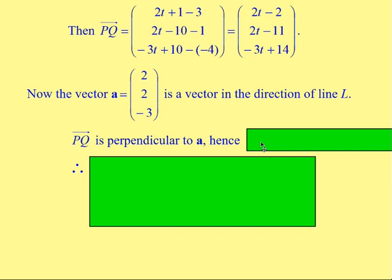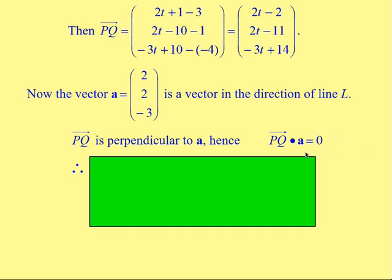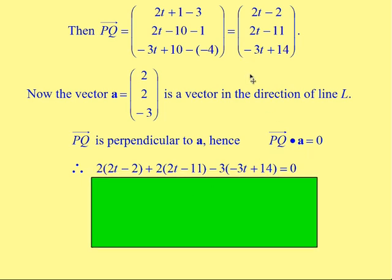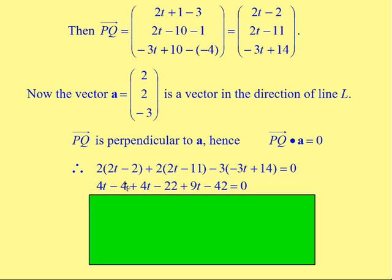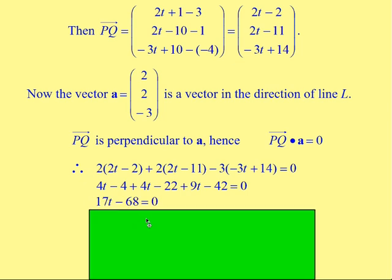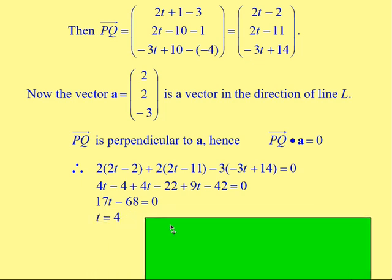Because PQ is perpendicular to vector A, we need to recall from Higher that when two vectors are at right angles, their dot product equals zero. So PQ · A = 0: that gives (2T − 2)(2) + (2T − 11)(2) + (−3T + 14)(−3) = 0. Expanding: 4T − 4 + 4T − 22 + 9T − 42 = 0. Simplifying: 17T − 68 = 0.